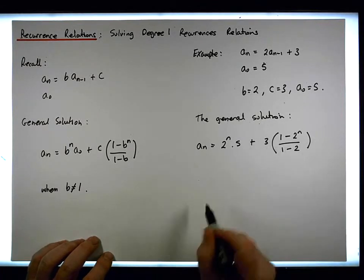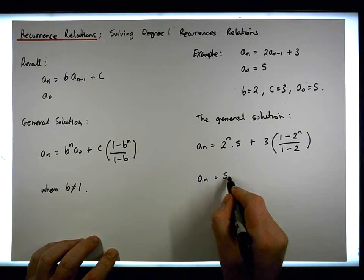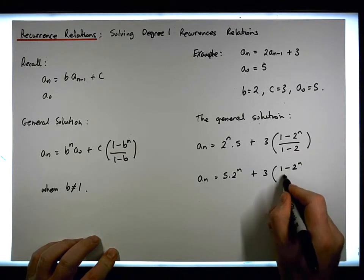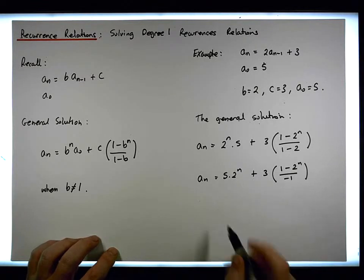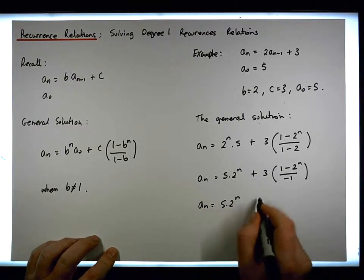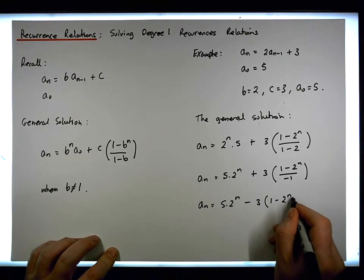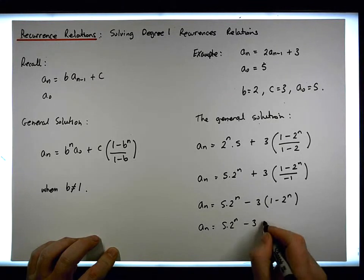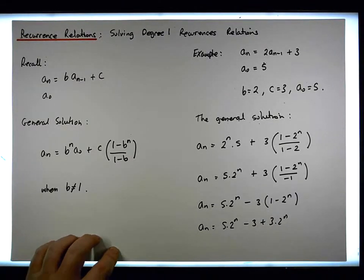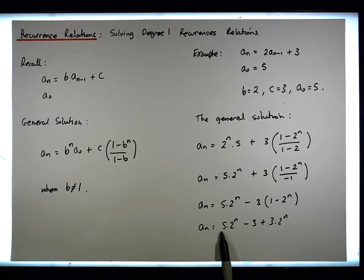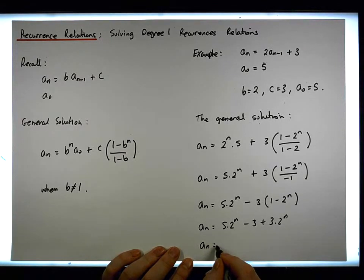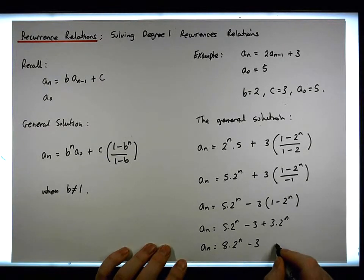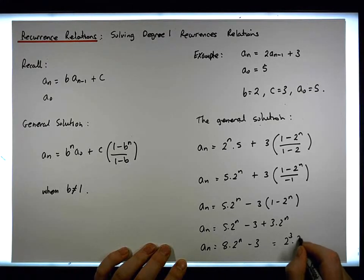Simplifying, this becomes a_n equals five times two^n, plus three times (1 minus two^n) all over negative one. Bringing the negative one out, this becomes a_n equals five times two^n minus three times (1 minus two^n). Distributing the three gives a_n equals five times two^n minus three plus three times two^n. Combining like terms, we get eight times two^n minus three. Note that eight is two to the power of three.